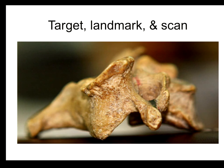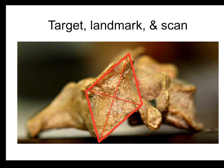Let me show you some landmarks about the facet or articular pillar. This is a lateral view of the articular pillar. When you see it on lateral view, you can see the diagonal of the articular pillar. Where lines cross, there is an intersection — this is the typical CM guide target.